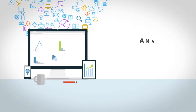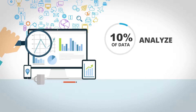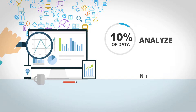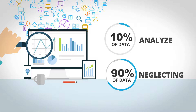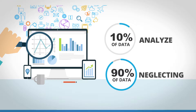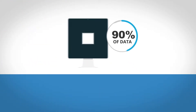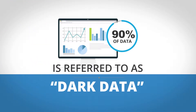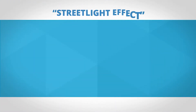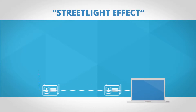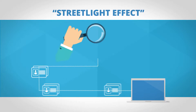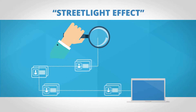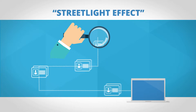Users in organizations analyze 10% of data while neglecting the other 90%. That 90% is referred to as dark data. This can be due to what we call the streetlight effect, which pushes users to follow their routine instead of getting insights on all the data.